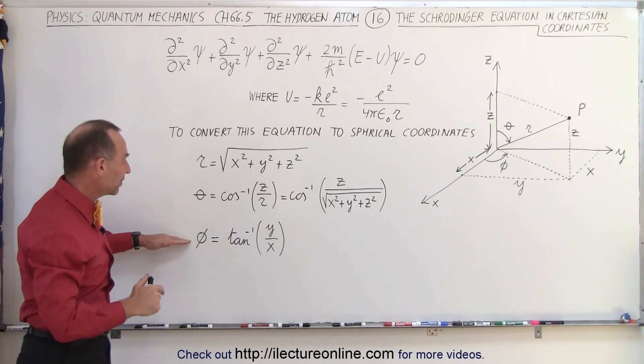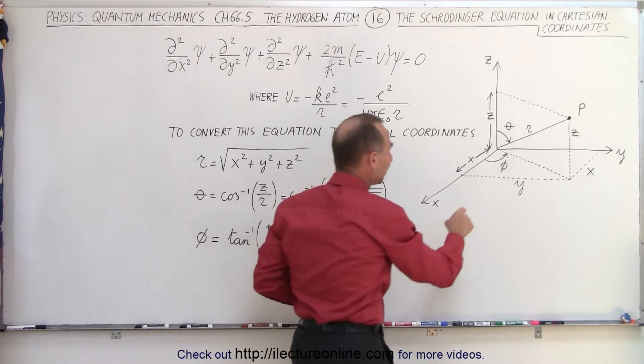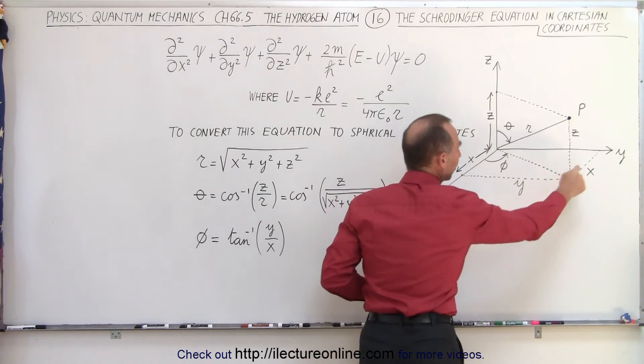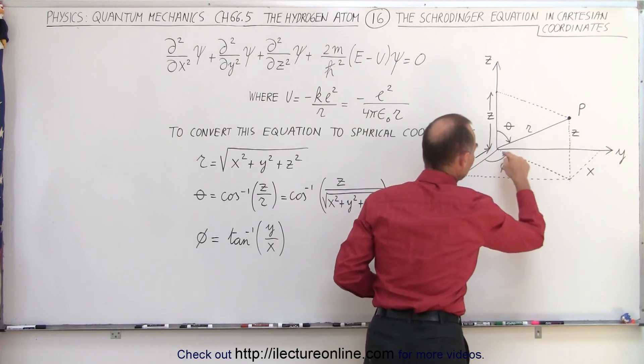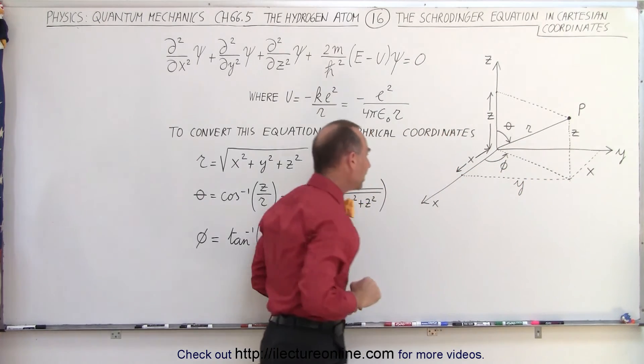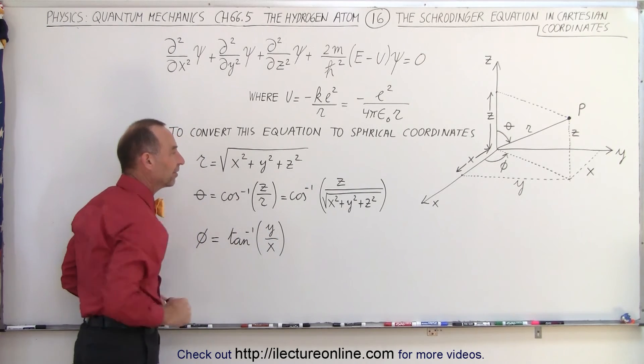And finally, we have the angle phi, which is the azimuth angle, which can be written as the inverse tangent of the opposite side over the adjacent side. So the distance from there to there, x, is the same as from there to there. And then we have the distance y, y is opposite of the angle phi. So when we take the inverse tangent, we take the opposite side over the adjacent side.